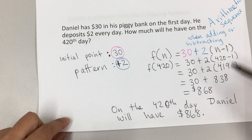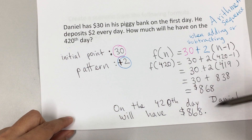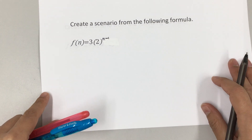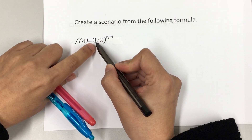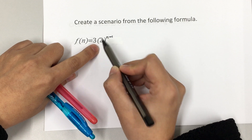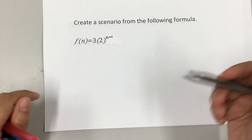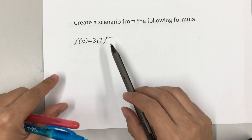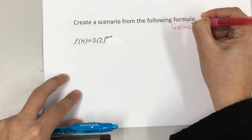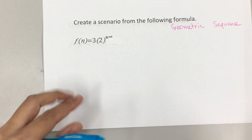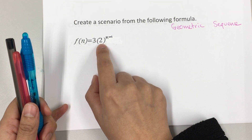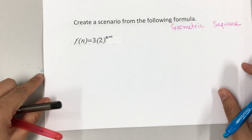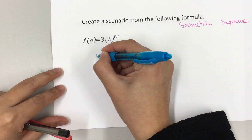Now let's try something different. You were given scenarios and found information and applied it — that's our objective. But what if I ask you to create a scenario given the explicit formula? The initial point is here; we're multiplying, so this is a geometric sequence. That's useful because later on we're going to be identifying the type of sequence. If we have multiplication with a power, that means it's a geometric sequence.